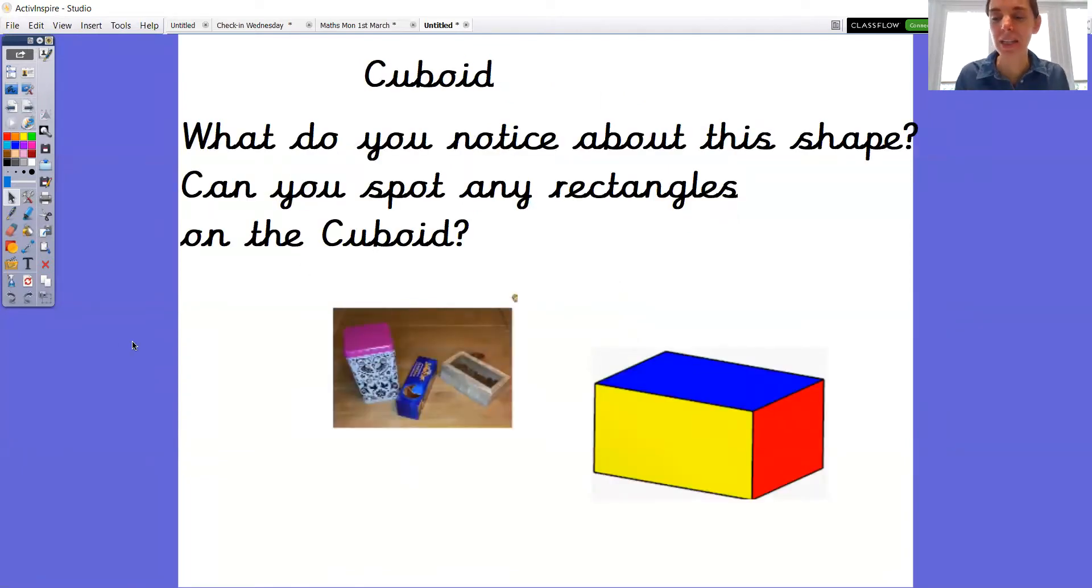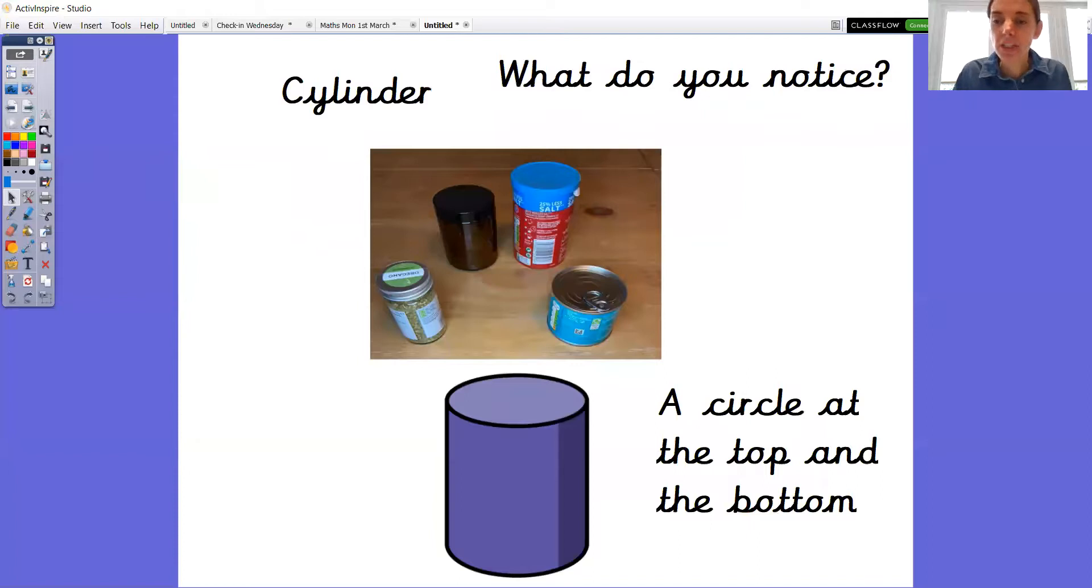Okay, so we're going to just have a look at some of these shapes again. Can you remember the name of this shape? Well done if you said cuboid. What do you notice about this shape? Can you spot some rectangles? Yeah, that's right. And I've got a cuboid here and it's got rectangular faces. And look here, I've got squared faces.